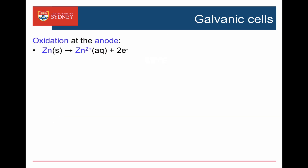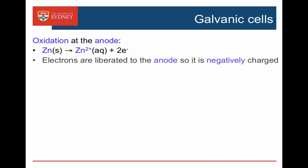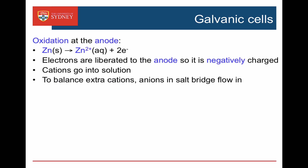So what's going on? At the anode, the zinc metal is going to zinc ions and two electrons. These electrons are liberated onto the anode and it becomes negatively charged, and the zinc ions go into the solution. Because we've got cations going into the solution, that cell will get positively charged, unless anions from the salt bridge flow in to balance those extra cations.